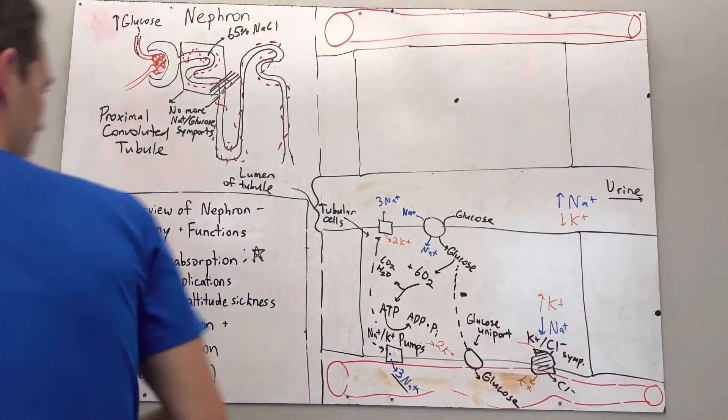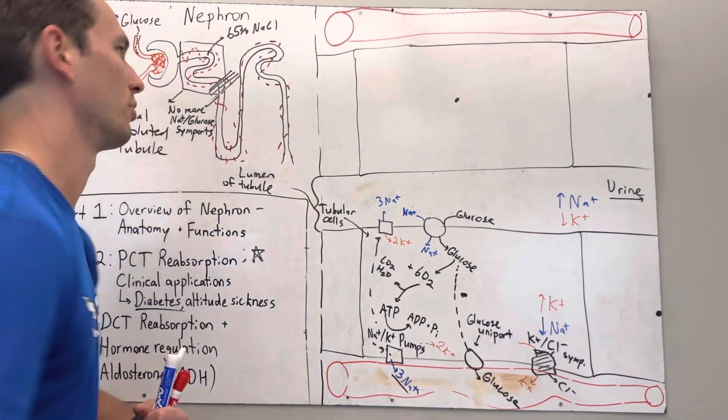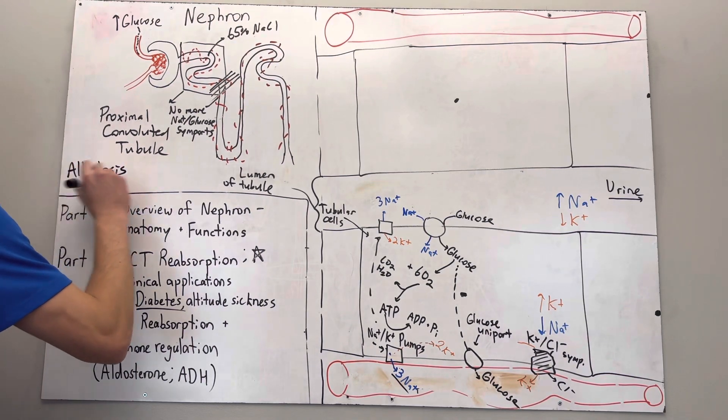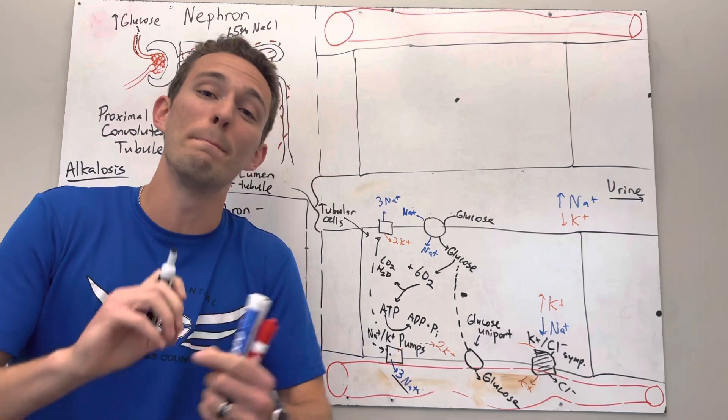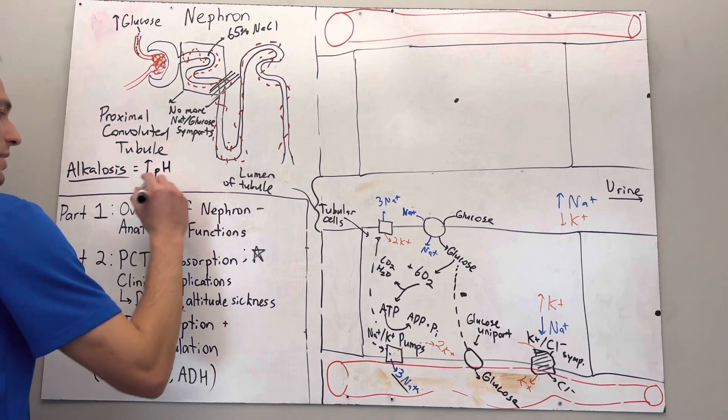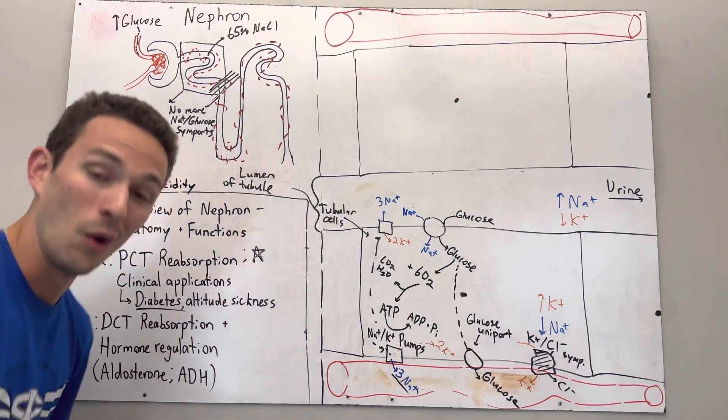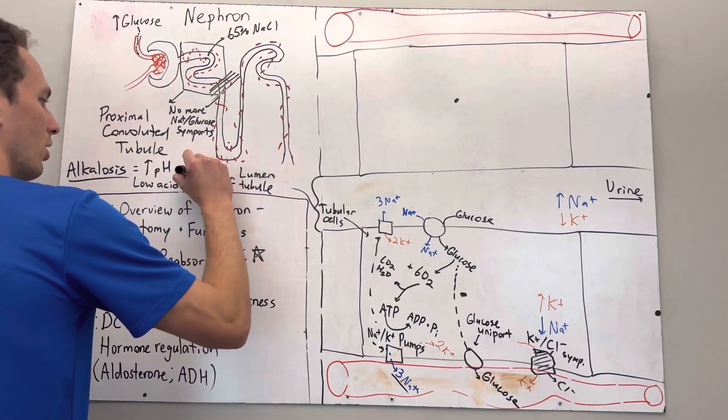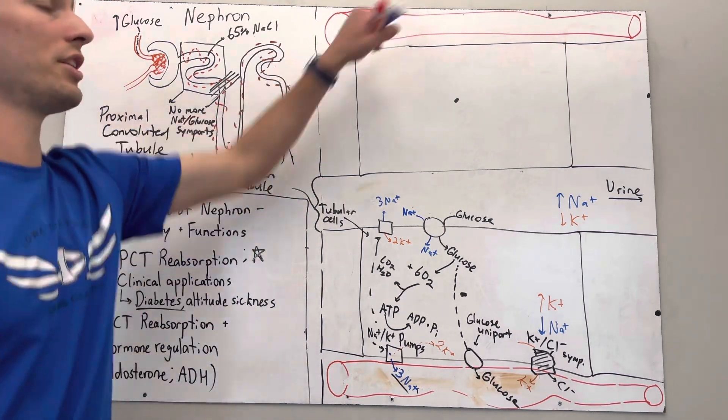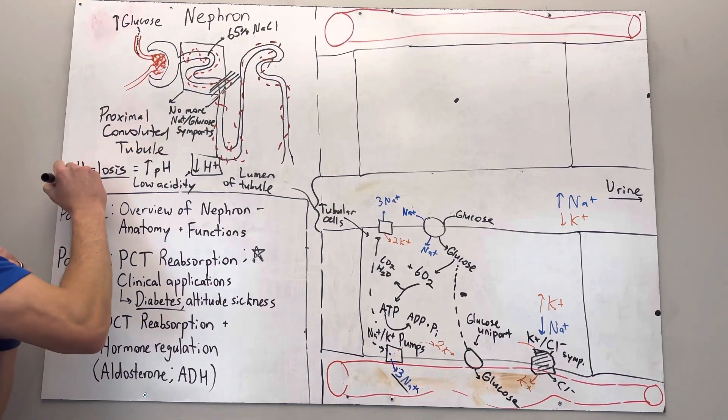Alright, so next thing up, respiratory alkalosis. This takes a little bit of time to explain when you have alkalosis. Alkalosis sounds a lot like the word alkaline, which means basic, which means you have a high pH, which otherwise means that you are low acidity level in your blood, which also means if you have low acidity, you have low hydrogen ions. And that's the issue. A lot of the times you have low hydrogen ions in your bloodstream. What that does is it raises your blood pH too high and you experience what's called alkalosis.